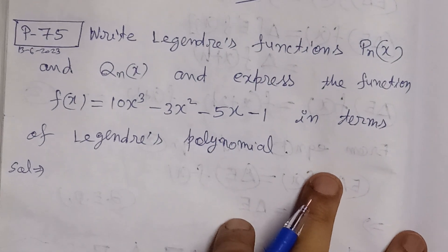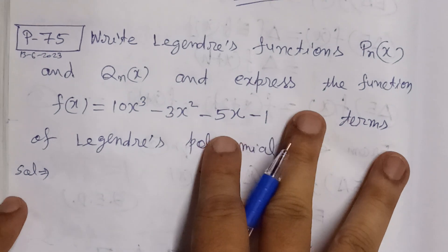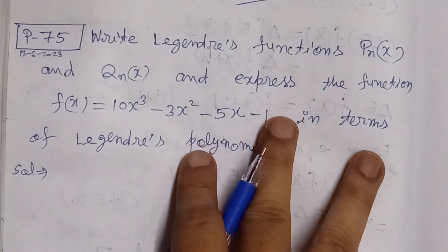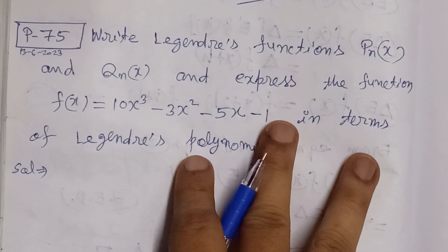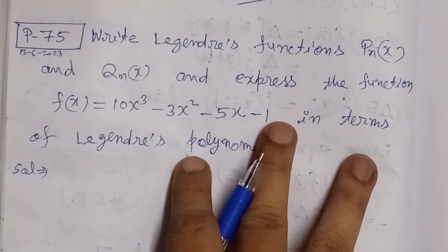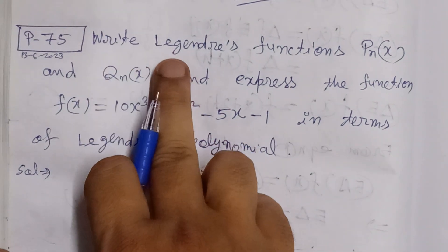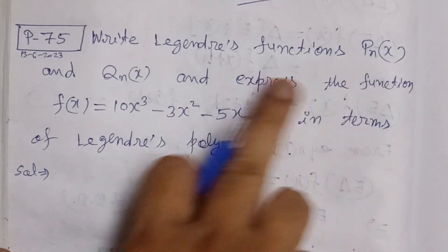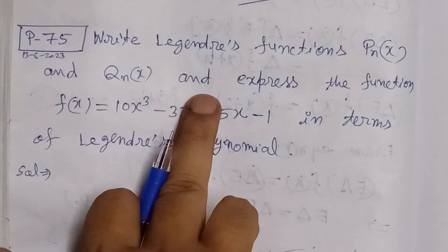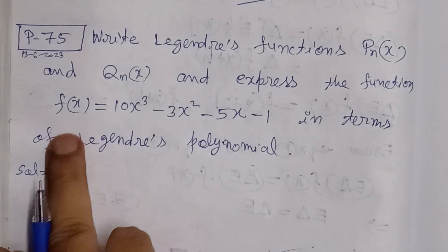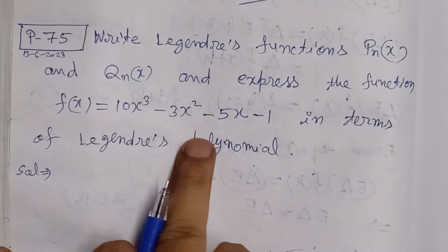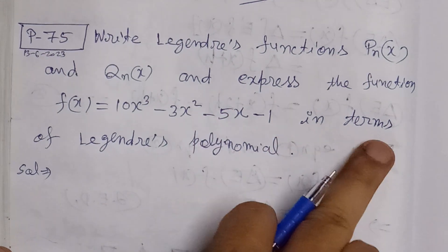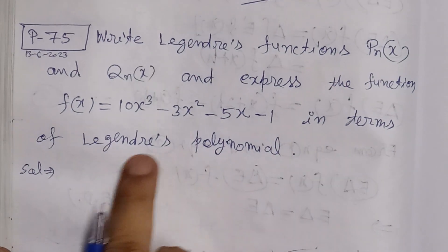Bismillahirrahmanirrahim. Problem 5 is related to Legendre functions Pn(x) and Qn(x). Express the function f(x) = 10x³ - 3x² - 5x - 1 in terms of Legendre's polynomial.